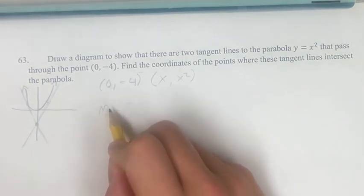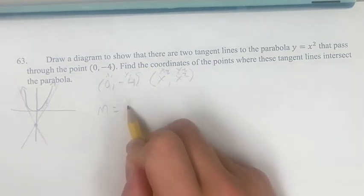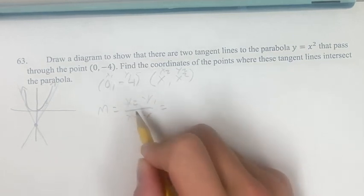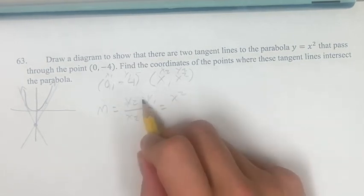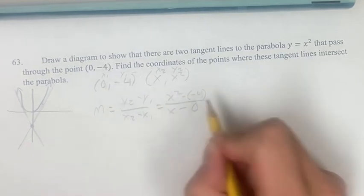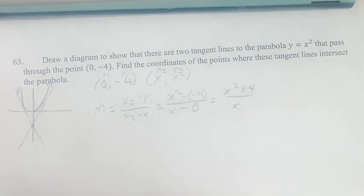So our slope, if we have this as point 1 and this as point 2, is y₂ minus y₁ over x₂ minus x₁. This is going to be equal to x² minus negative 4 over x minus 0, which equals (x² + 4)/x.